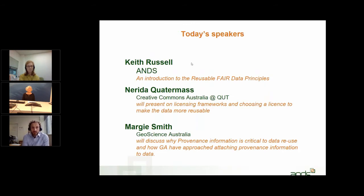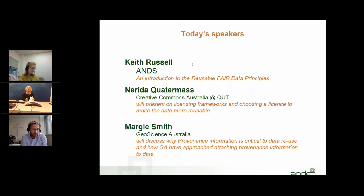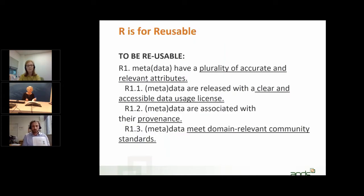Today I'll give a brief introduction on what Force11 says about Reusable under the FAIR data principles. Then I'd like to hand over to Nerida from Creative Commons, who will talk about licensing frameworks and choosing a license to make your data more reusable. After that, Margie Smith from Geoscience Australia will talk about provenance information — not only why it's important, but also how GA has approached attaching provenance information to research data.